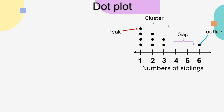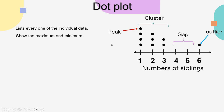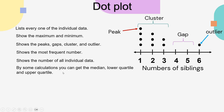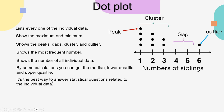The dot plot has several characteristics. It can list every individual data point. It shows the maximum and minimum values. It shows peaks, clusters, and outliers. It shows the most frequent number. It shows the total number of data by counting all dots. With some calculation, you can find the median, lower quartile, and upper quartile. The dot plot is the best way to answer statistical questions related to individual data.